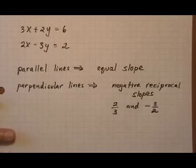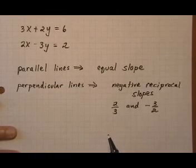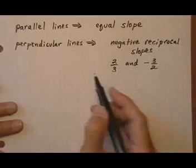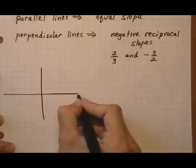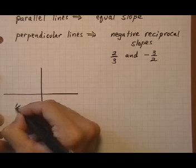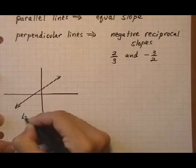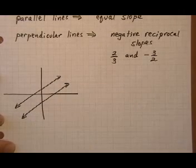And that idea kind of makes sense because if you think about parallel lines, let's make those right over here. If I had two parallel lines on a graph, they might go something like this. They have equal slopes.